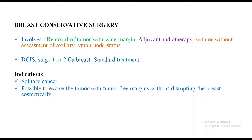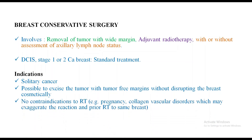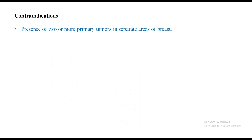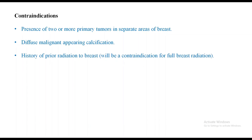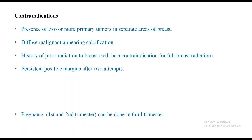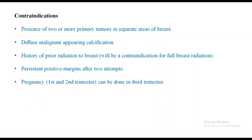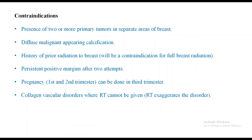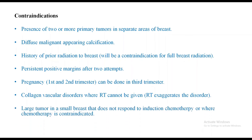Indications for breast conservation surgery: solitary cancer possible to excise with tumor-free margins without disrupting breast cosmetics, no contraindication to radiotherapy, and well-motivated patient. Contraindications: presence of two or more primary tumors in separate breast areas, diffuse malignant-appearing calcification, history of prior radiation to the breast, persistent positive margins after two attempts, pregnancy in first and second trimester (can be done in third trimester), collagen vascular disorders where radiotherapy cannot be given, and large tumor in small breast not responding to induction chemotherapy.